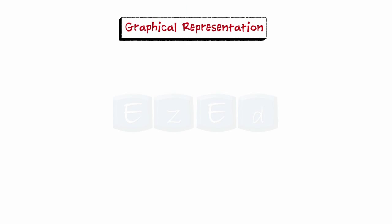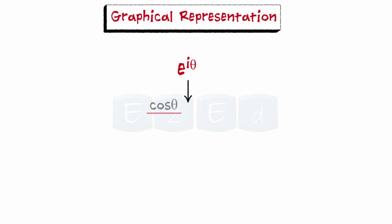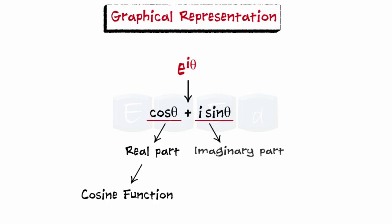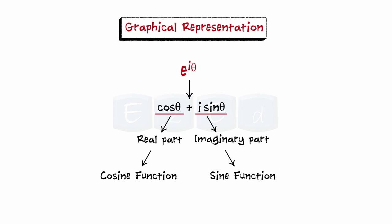The graphical representation of the complex exponential function e^(iθ) clearly shows the relation to the trigonometric functions. The real part of e^(iθ) is cosine and the imaginary part is sine, with period 2π in radians.